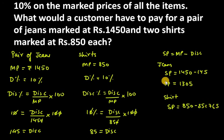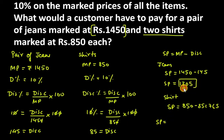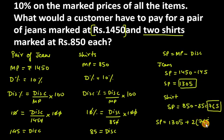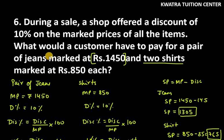The customer bought one pair of jeans and two shirts. So the total selling price = SP of jeans + 2 × SP of one shirt = 1305 + 2 × 765 = 1305 + 1530 = rupees 2835. So the customer has to pay rupees 2835. This is the answer for question number 6. Please like and share the video. Thank you!